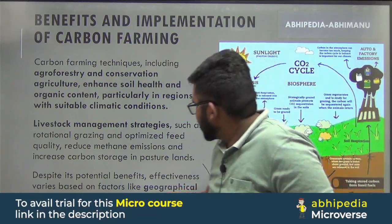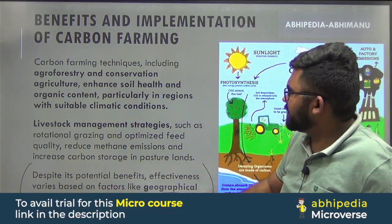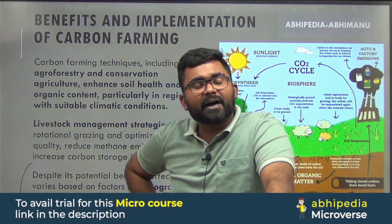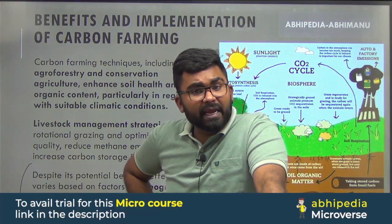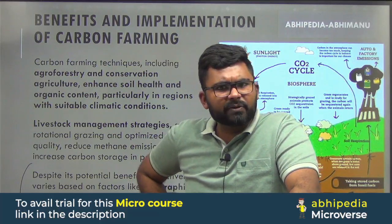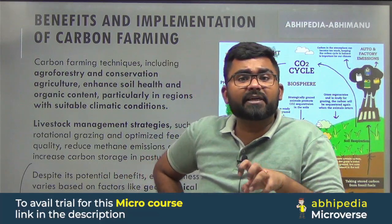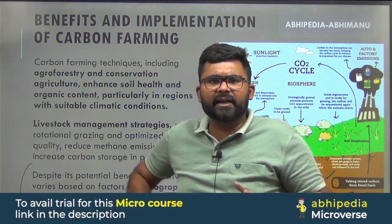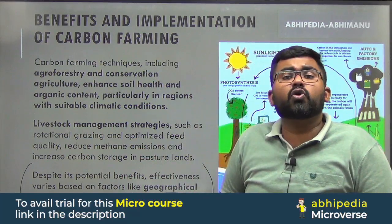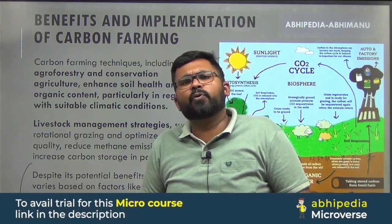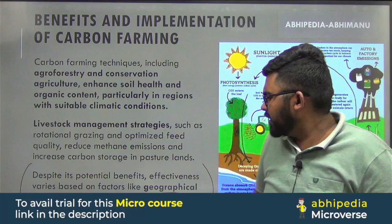Despite its potential benefits, the effectiveness of carbon farming varies based on factors like geographical location, soil type, water availability, and farm size. By sequestering carbon, you can mitigate climate change. Currently, throughout various major global reports — from the World Bank, UN, and others — two major problems are consistently highlighted: number one is climate change, and number two is ongoing conflicts.